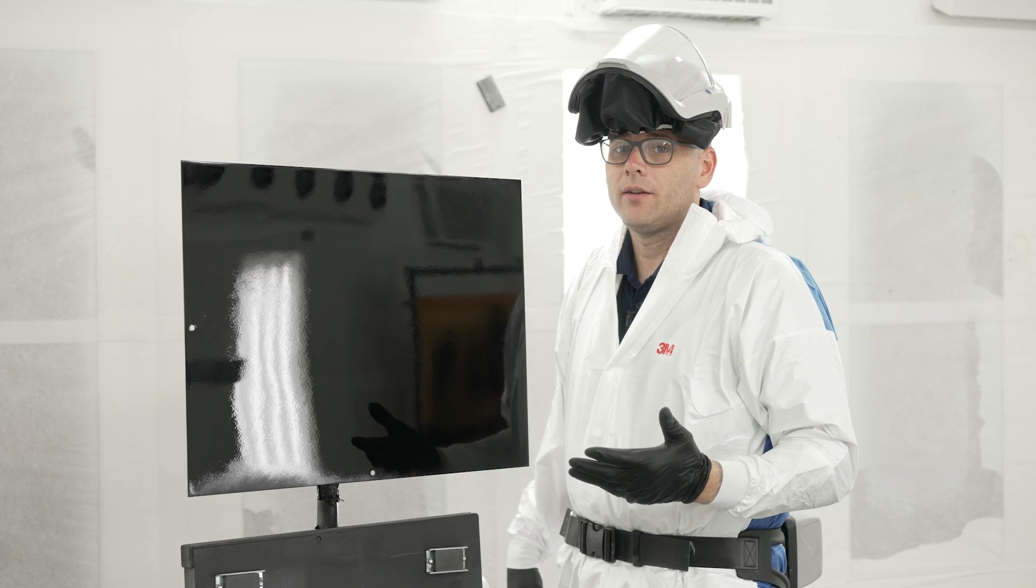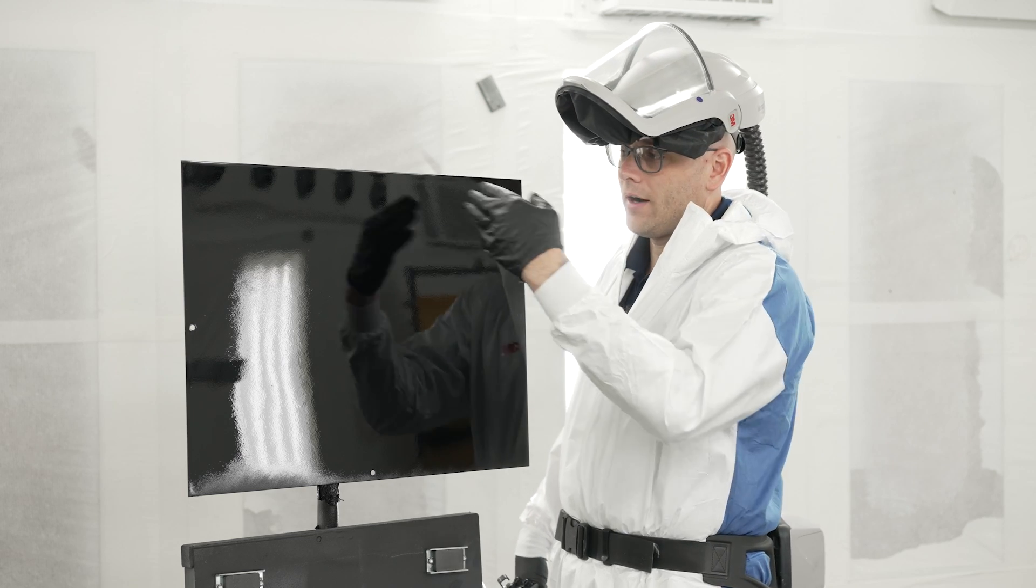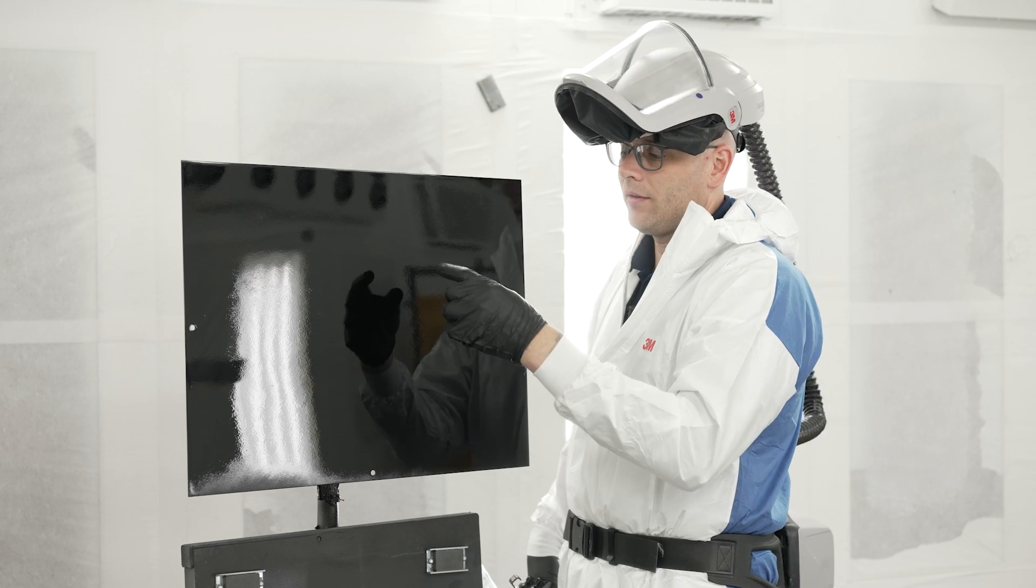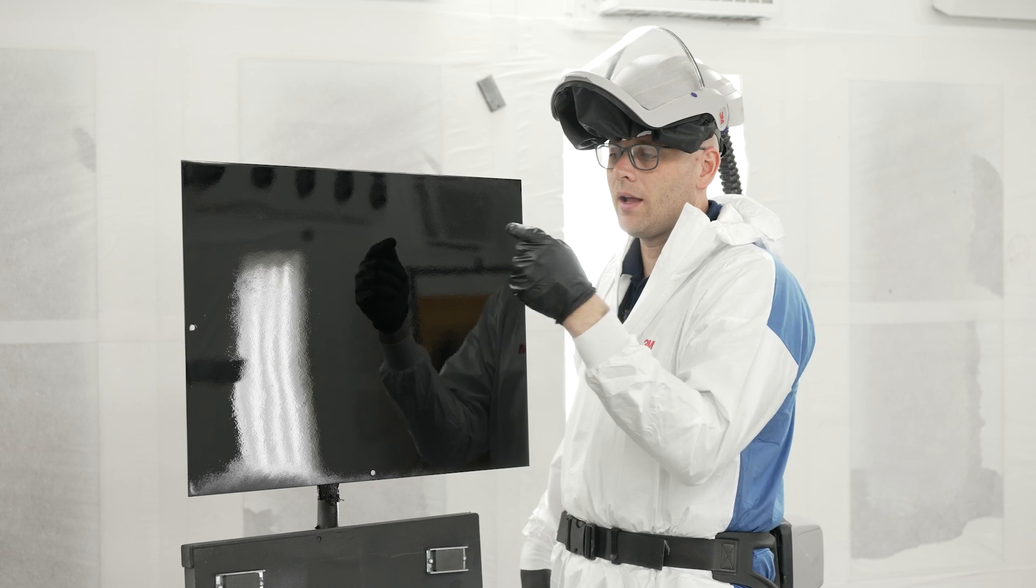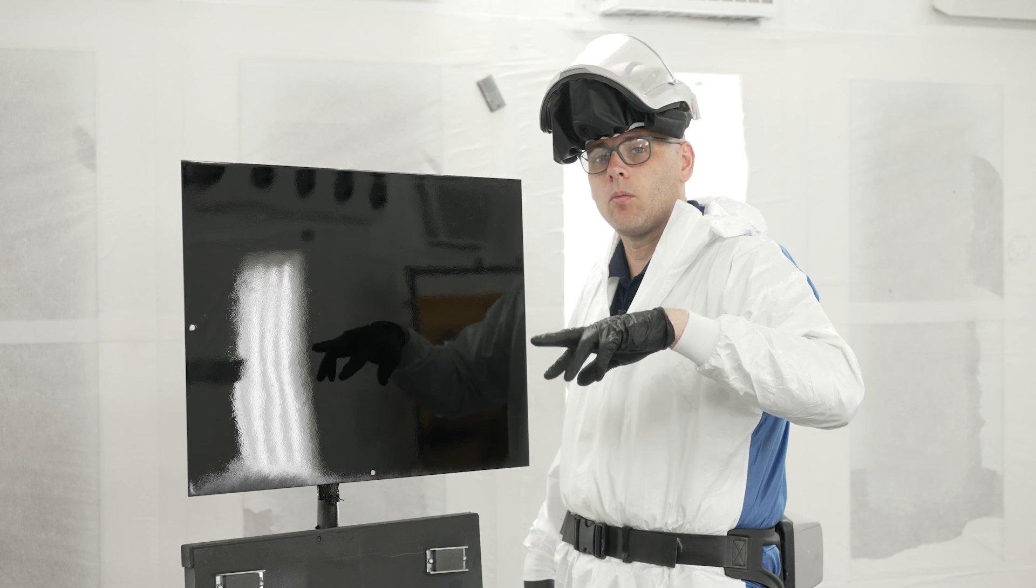So there is a way to try to fix these while we're spraying in the booth to see if this is a job we can save. Where a lot of painters make mistakes is they'll try to flood the panel to try to fill in those fish eyes, but basically those fish eyes, whatever contaminant is in there, is going to keep pushing the paint away, and those holes will keep coming through. So we actually have to do the opposite of what we would think.